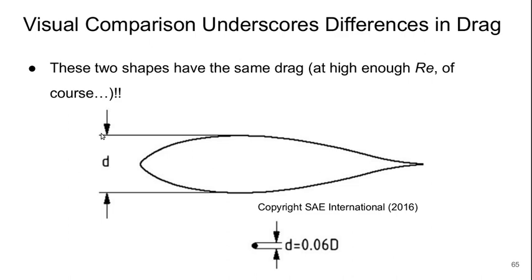So we've got this large streamlined body with width D and a little tiny cylinder with 0.06 D, so 6%. And this and this have the same drag on them. This really shows the impact that streamlining can have on drag.